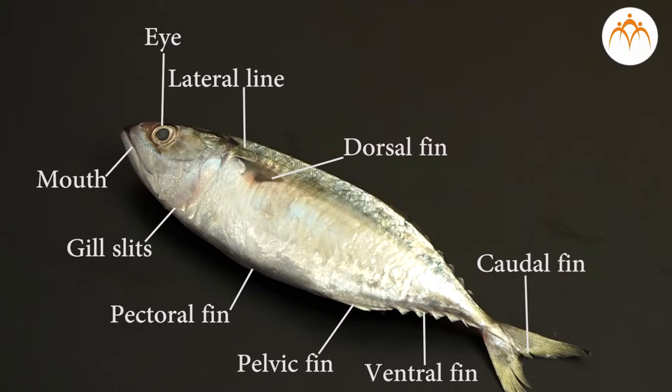Class Pisces: these are cold-blooded (poikilotherms) aquatic animals living in marine and freshwaters. The body is spindle-shaped to minimize water resistance. They have paired and unpaired fins for swimming. The tail fin is useful as a steering organ during swimming. Exoskeleton is in the form of scales and endoskeleton is either cartilaginous or bony.